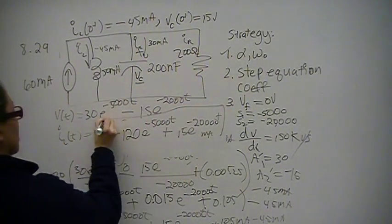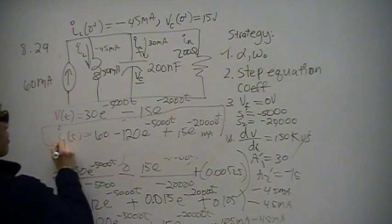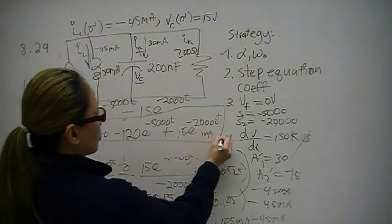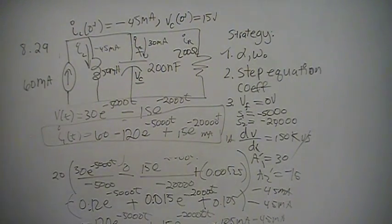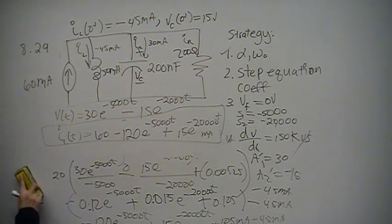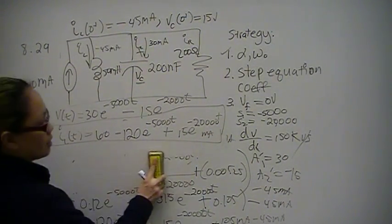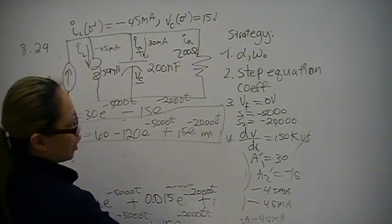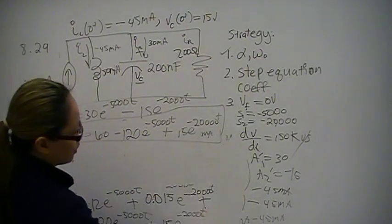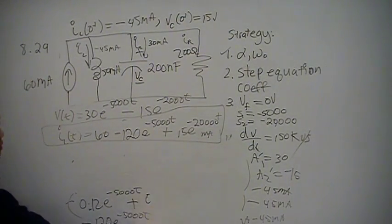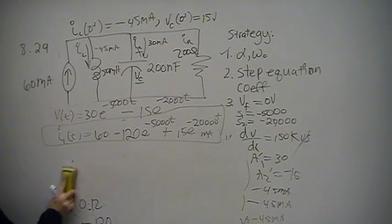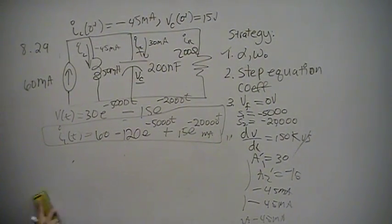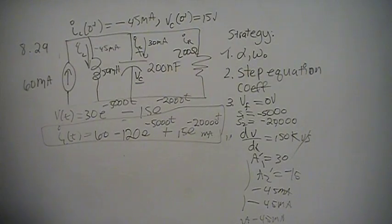I_L of t equals 60 minus 120e to the negative 5,000t plus 15e to the negative 20,000t milliamps. That is the answer to problem 8.29. I hope you found that helpful — please subscribe and give me a like. Thanks.